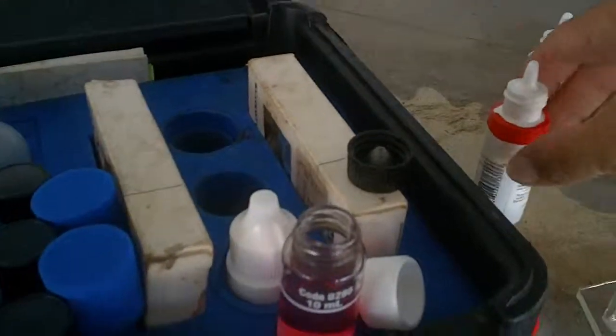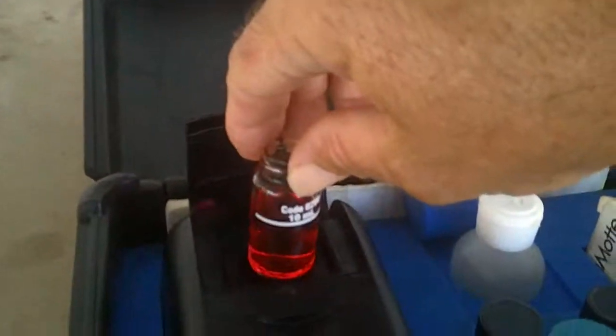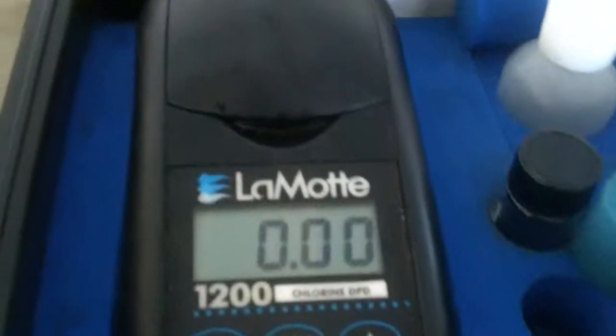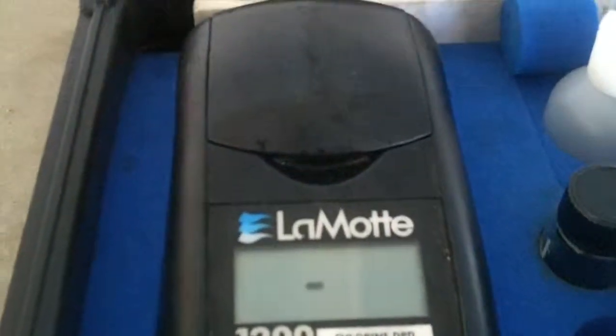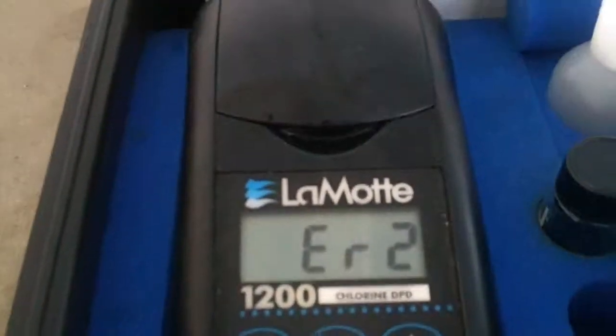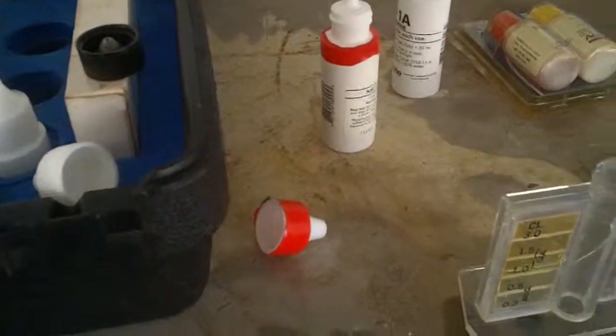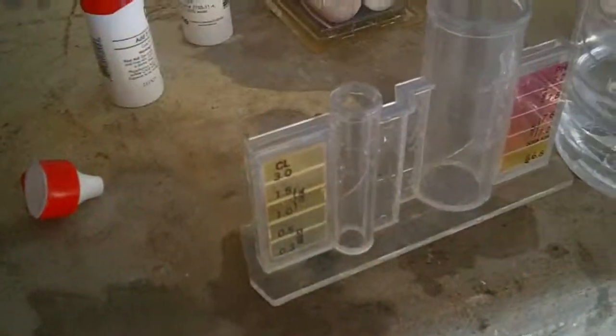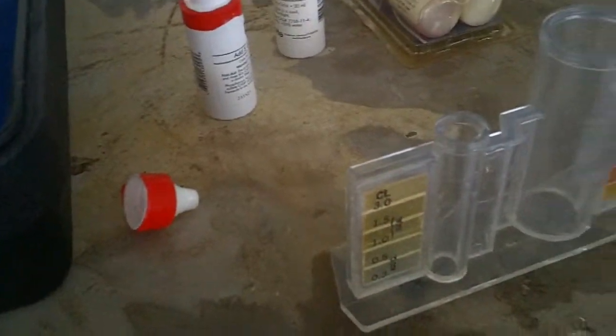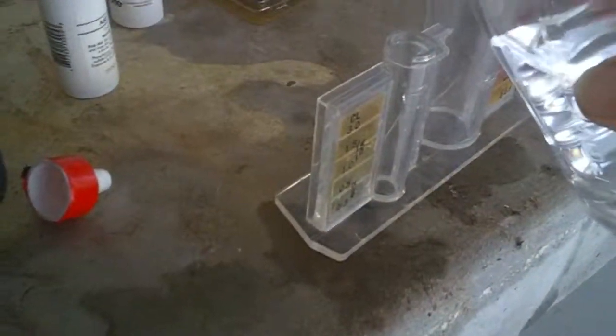All right, you see how it's turned pink? That's telling us we've got good chlorine in there. It may be too high to read, but this meter reads up to a 4.0 residual. Okay, you see this is ER2, that means we've got more than a 4.0, which is good, you know, nobody's swimming in it. So, that'll be our control.